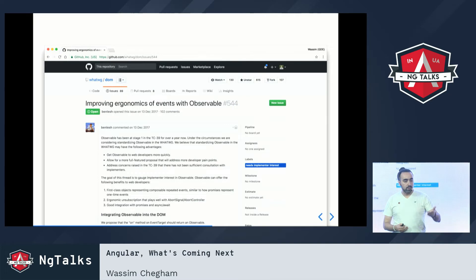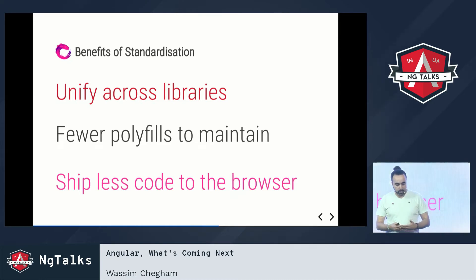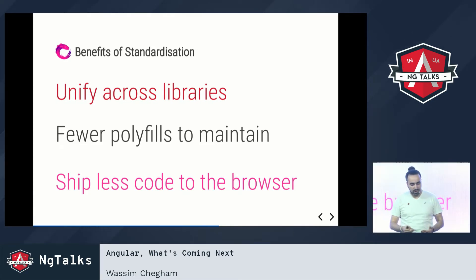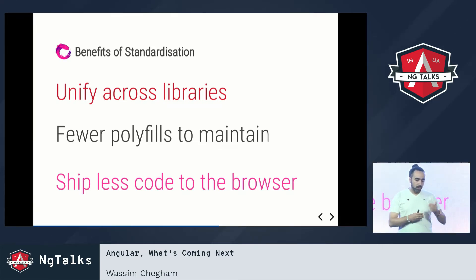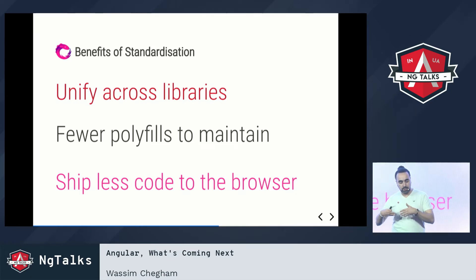There is a proposal by Ben Lesh, as Tracy mentioned, to have the observable API baked directly into the browser. With this, we'd have a unified library — RxJS, Cycle, Bacon, and other observable implementations — in one unified version. This also means fewer polyfills. For instance, RxJS is kind of a polyfill for observables. Fewer polyfills means less code shipped to the browser, and hence your application should load faster.